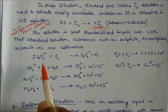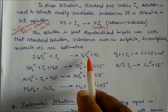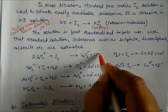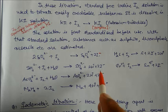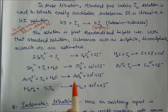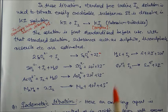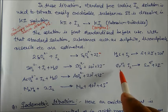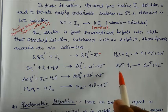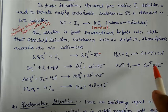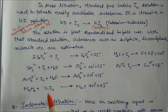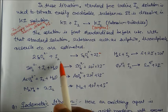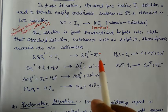Examples of iodimetric reactions: thiosulfate (S₂O₃) reacts with iodine to form S₄O₆²⁻ and iodide. Sulfite reacts with iodine to form sulfate and iodide. Arsenide with iodine forms arsenate. Hydrazine with iodine gives nitrogen and iodide. Stannous (Sn²⁺) is converted to stannic (Sn⁴⁺). In all these reactions, iodine is converted to iodide.